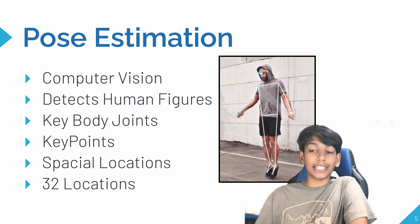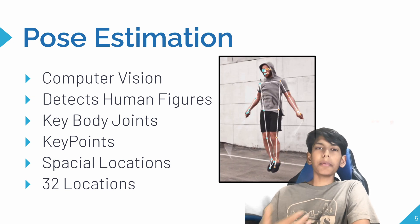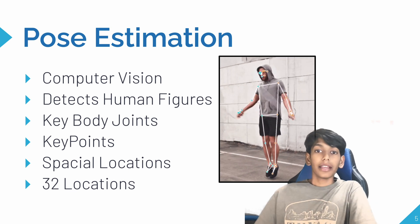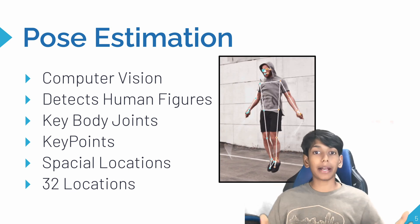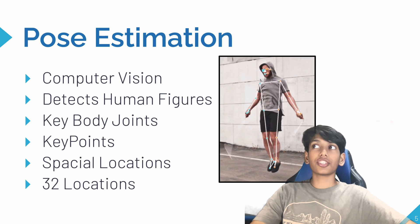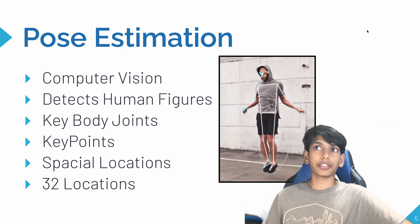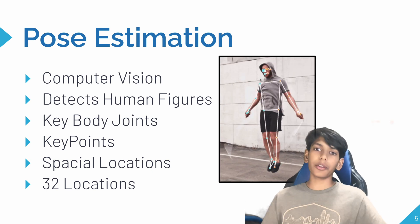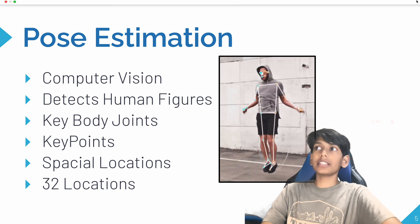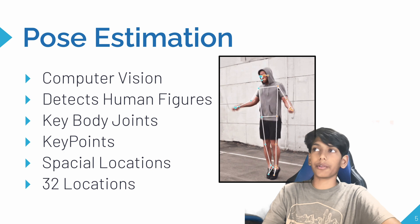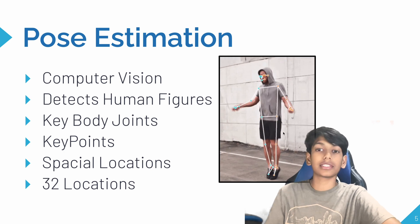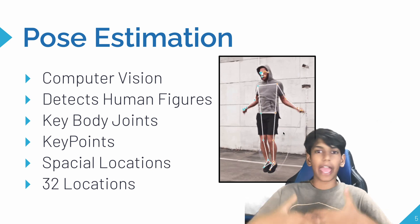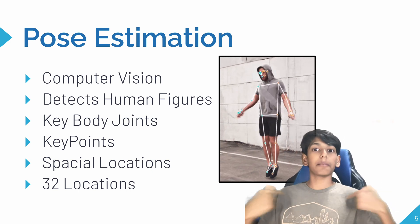Next up, let's see what Pose Estimation is. Pose Estimation is a computer vision model created by MediaPipe. What it does is it detects human figures and points them out on the screen. It points out all of the key body joints, otherwise known as key points. You can see those on this person's body — this is a key point here, here, here. It detects all of those points on any human body that it finds and then points those out.